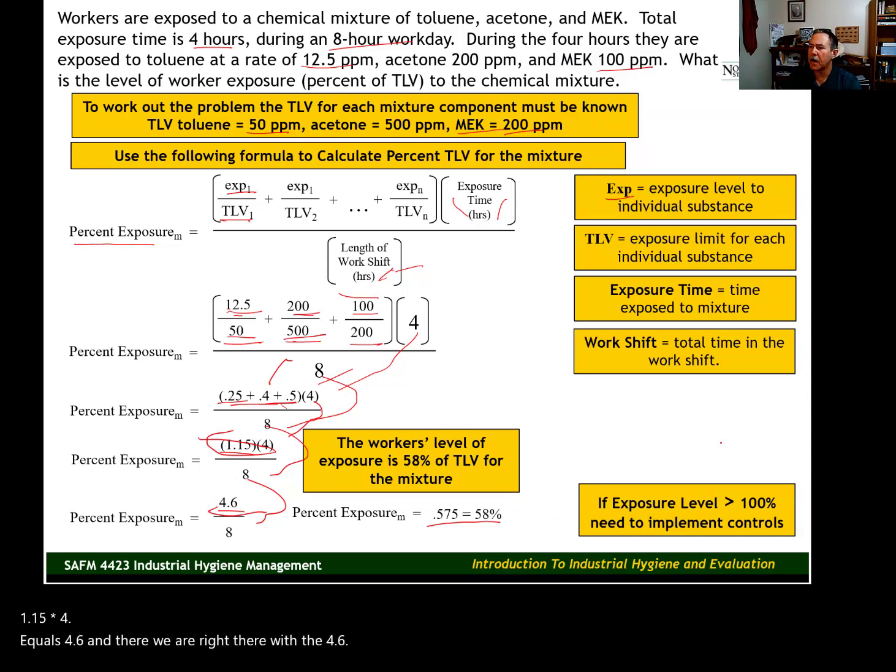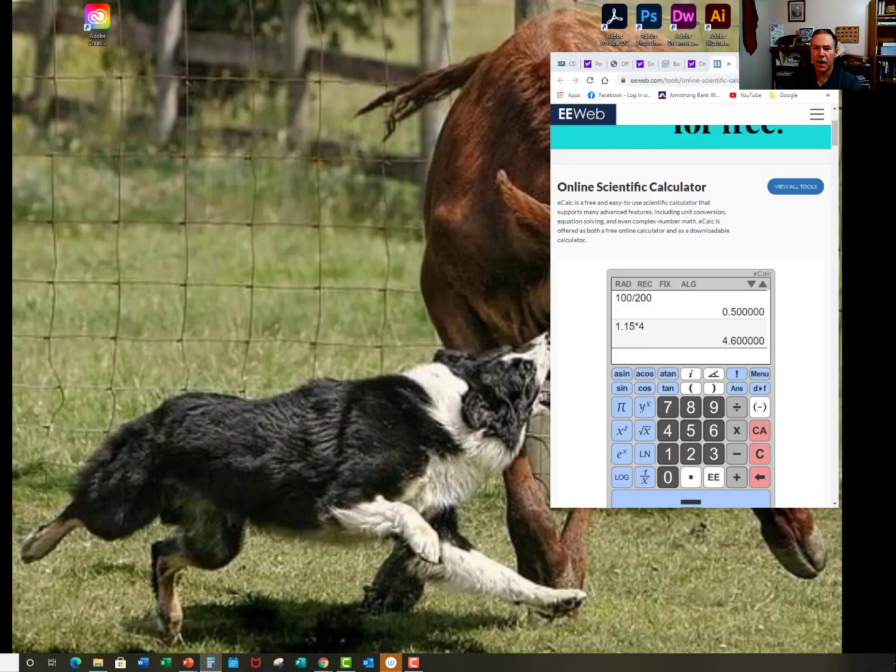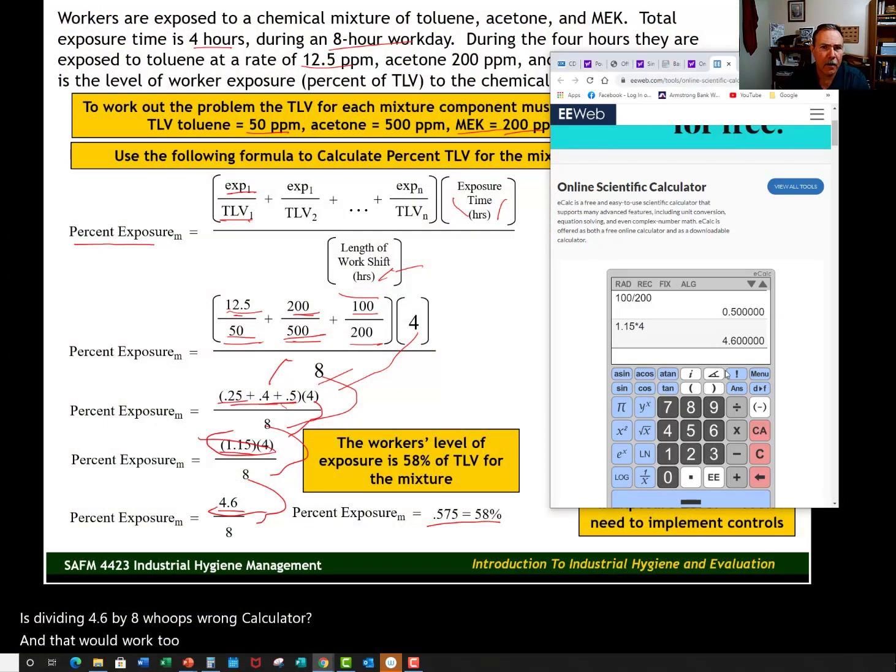Now the last mathematical operation is dividing 4.6 by 8. I like this calculator I found online a little better. We need to divide 4.6 by 8. 4.6 divided by 8 equals 0.575. We convert that to a percent—we round to two places—58% is our level of exposure.